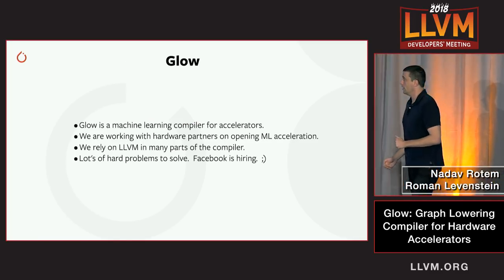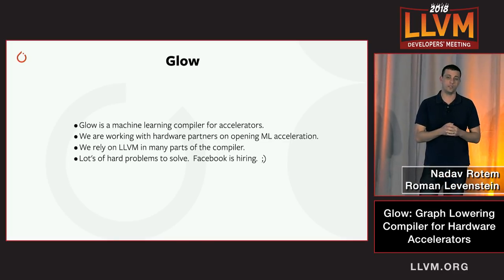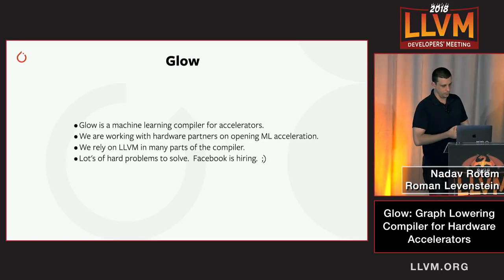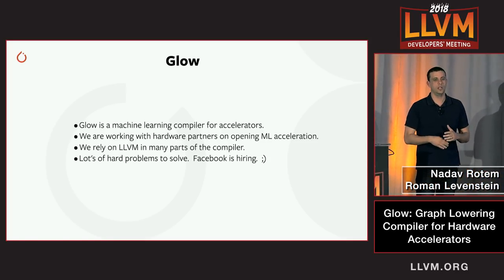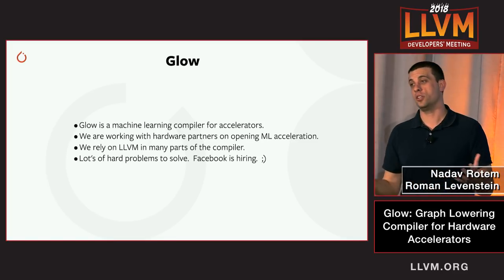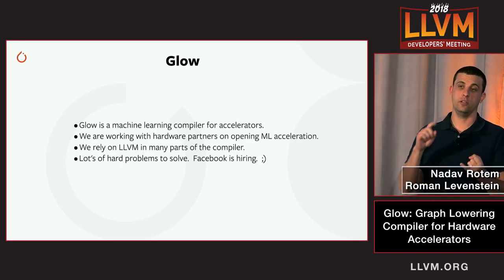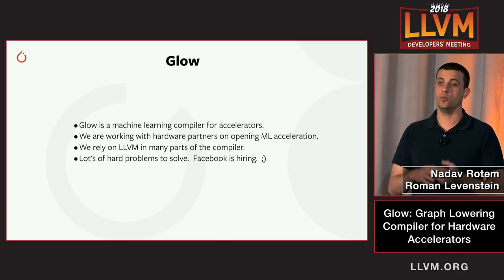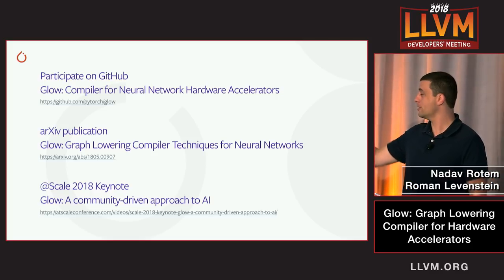In summary: Glow is a compiler for neural networks. We make neural networks run on accelerators. We are working with hardware partners to make accelerators available to the whole community through Open Compute. At Facebook we're also working on LLVM itself, HHVM, Android, and a number of other projects. We are hiring — come talk to us after this talk. Thank you very much.